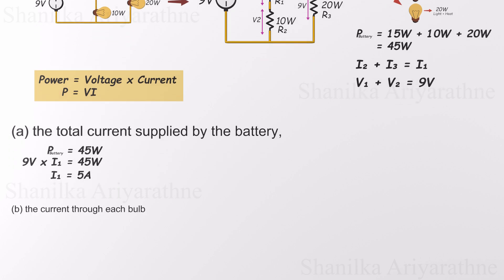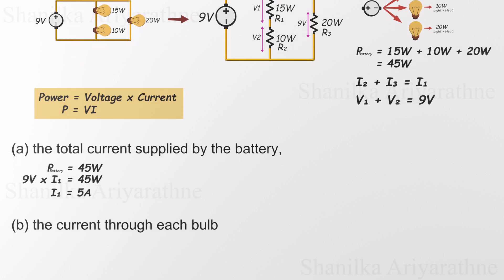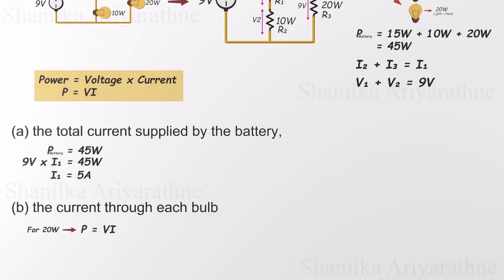Now that we know the total current flowing out of the battery is 5 amps, let's break that down and figure out how much current flows through each individual bulb. We'll start with the 20-watt bulb. Since it's the simplest, this bulb is connected directly across the full 9 volts of the battery and isn't sharing its path with any other components. So we use our trusty formula again, P equals V times I. Plugging in the values, we get 20 equals 9 times I, which gives us I equals 2.22 amps. That means 2.22 amps flow through the 20-watt bulb alone.